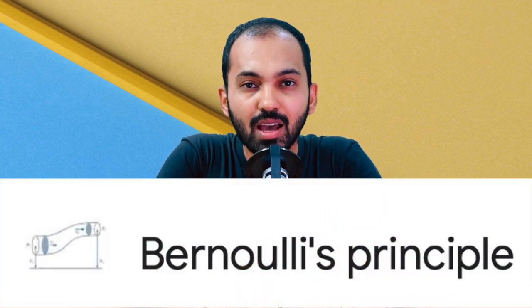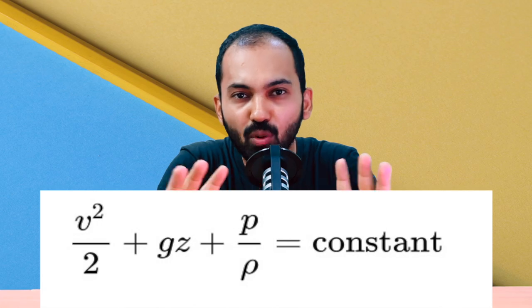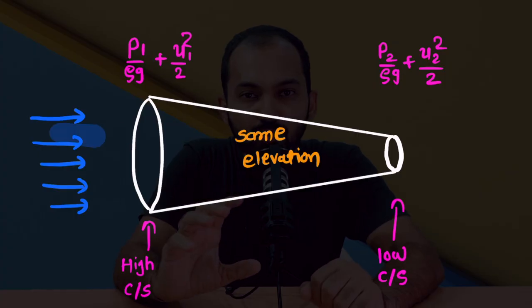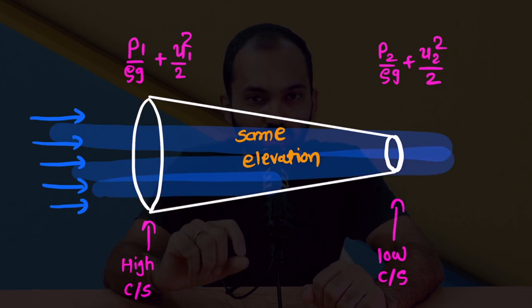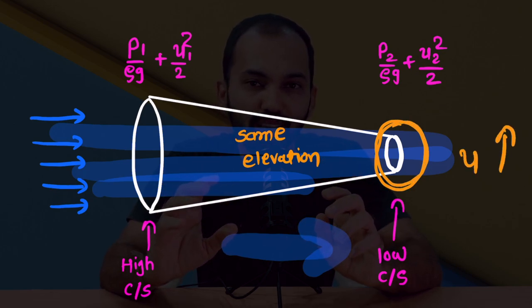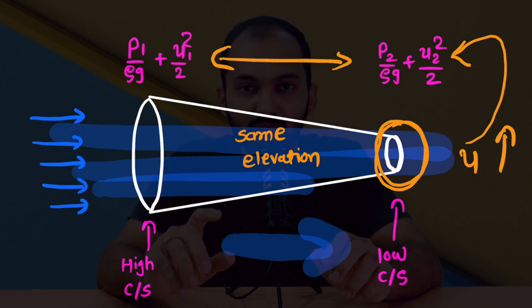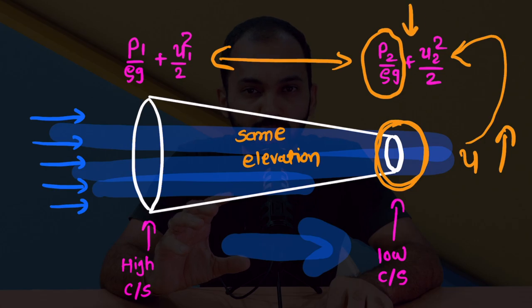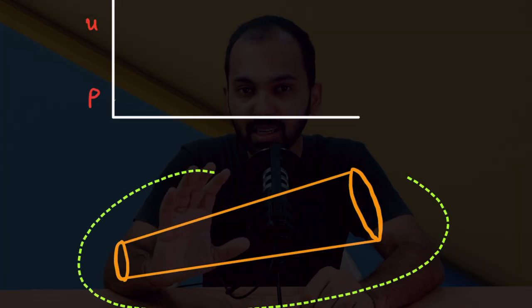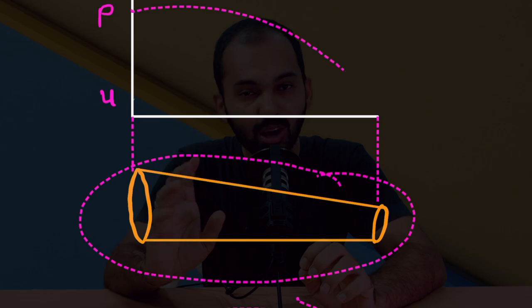The second concept is Bernoulli's Principle. As per the principle, the summation of mechanical energy is constant at any point in the pipe. If fluid flows from a higher cross-section area to a lower cross-section area, to balance the equation: as area increases, pressure increases and velocity reduces; as area decreases, pressure decreases and velocity increases. Both concepts are helpful to discuss NPSH available and cavitation.